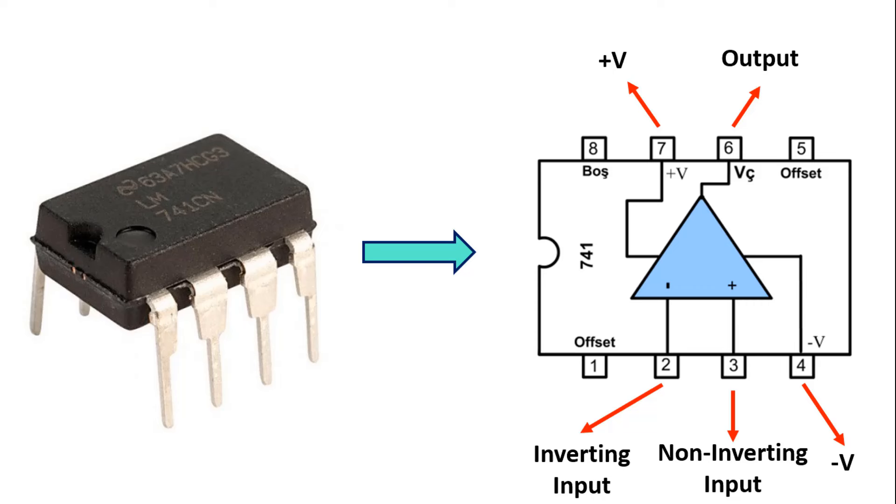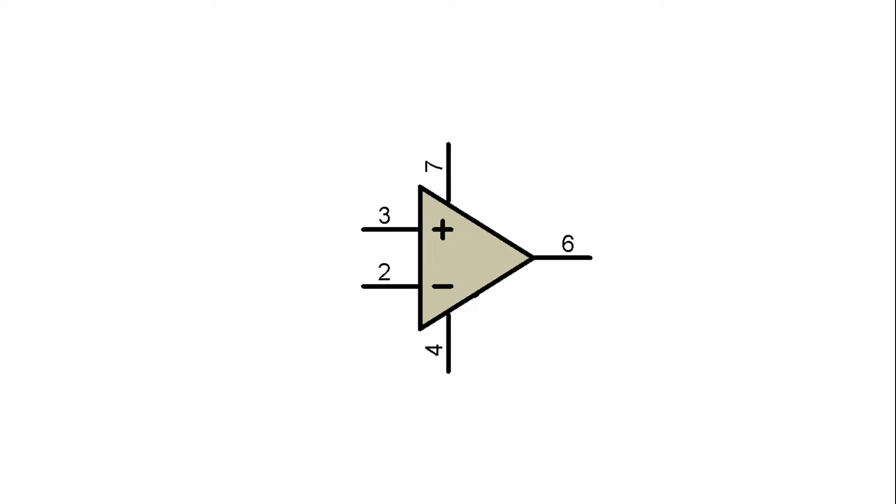So, how's the symbol for this? Let's look at it now. The circuit symbol is as you see here. As in its integrated structure, number 2 indicates inverting input, number 3 indicates non-inverting input, number 6 output, number 7 positive feed, and finally, number 4 negative feed.